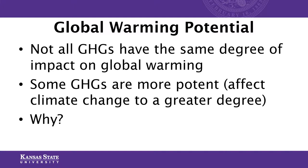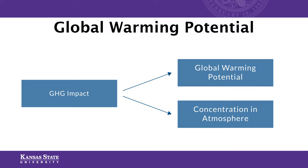The reason we focus on carbon dioxide and methane the most is because not all greenhouse gases have the same impact on global warming. Some greenhouse gases affect climate change to a greater degree than others. The impact a gas will have on climate change is the result of two things: its global warming potential and how concentrated it is in the atmosphere — those two factors combined determine its impact.